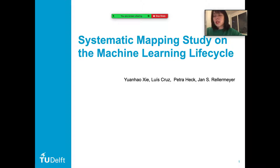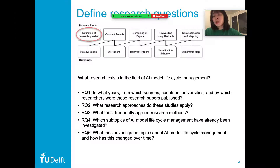Taking all of this into account, we decided to conduct a systematic mapping study to gain insight into the current research status. The process we apply for the systematic mapping study is shown in this figure. It consists of five steps.